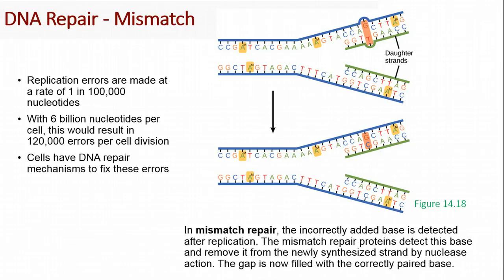So sometimes DNA replication makes mistakes. And it makes a mistake in replication about one in every 100,000 nucleotides that we add. And that really doesn't sound like a big deal, except we're adding 6 billion nucleotides for every cell every time a cell is divided. That means we would have 120,000 errors in each new cell that we're making. And that's a lot of errors, and that would introduce a lot of mutations. So we have something called DNA repair.